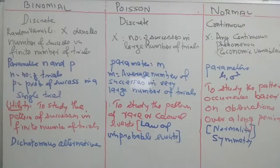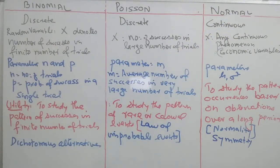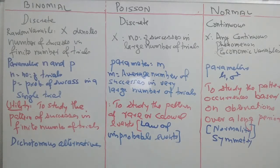We are discussing and making a comparison between three distributions: binomial, Poisson, and normal. These three distributions are used to evaluate probabilities. There are several distributions in statistics, but in management studies we use these three distributions — binomial, Poisson, and normal.